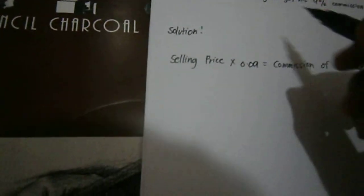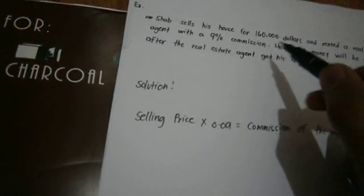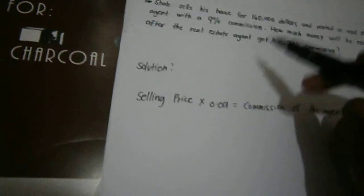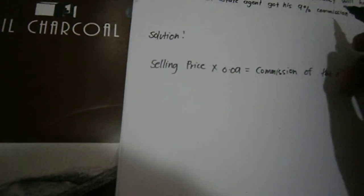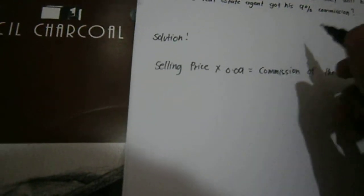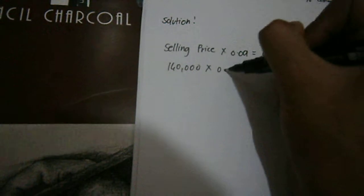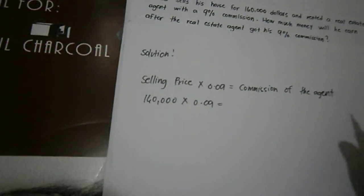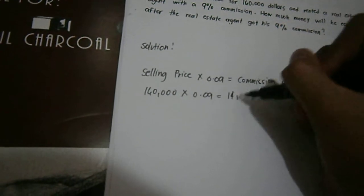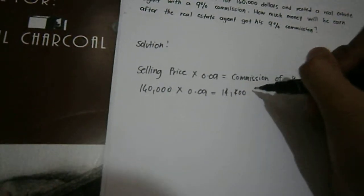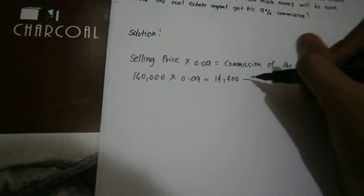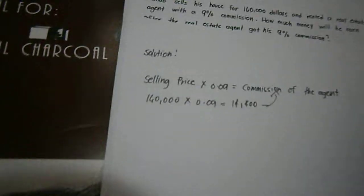The selling price is $160,000, and 9% converted to a decimal value is 0.09. $160,000 times 0.09 equals — I solved it on a calculator and got the answer of $14,400, and that's the commission of the agent.